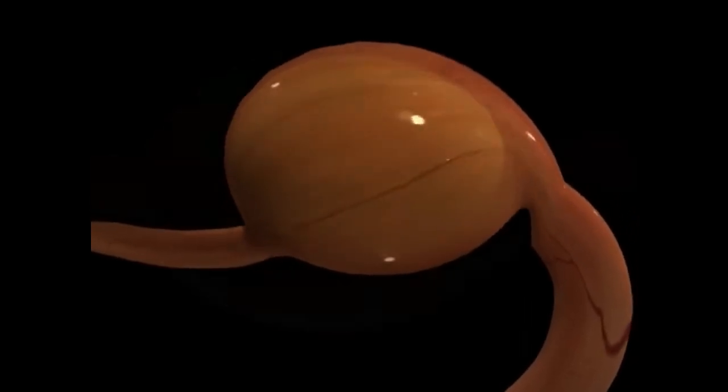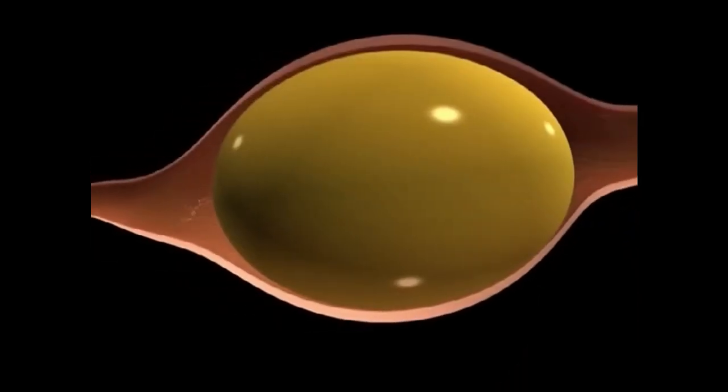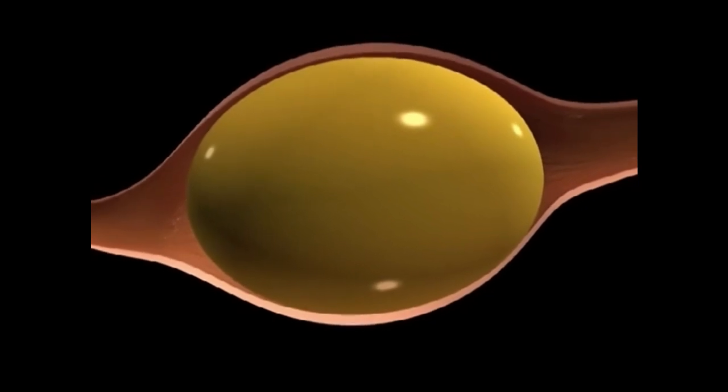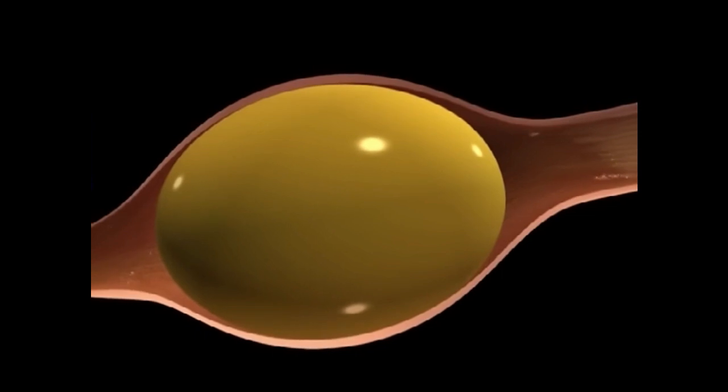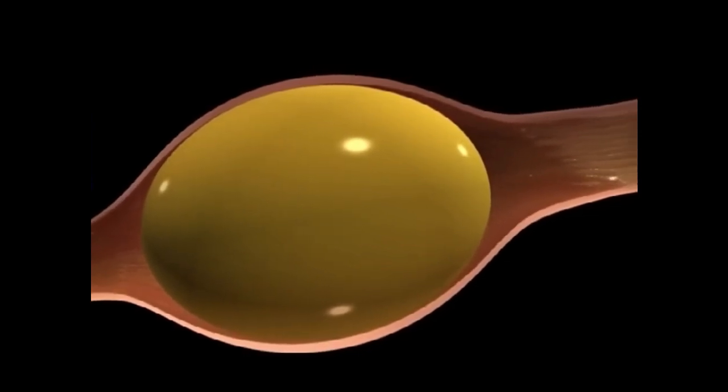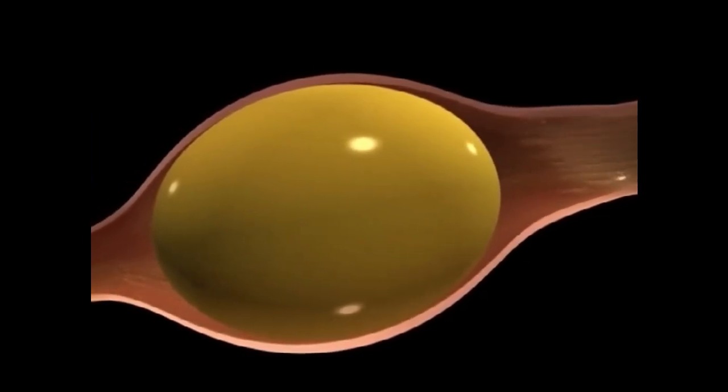When the yolk emerges from the follicle and moves into the upper part of the infundibulum, it's the only time in its progress when it is not covered by a layer of albumin. Fertilization, if it is to occur, will take place here.